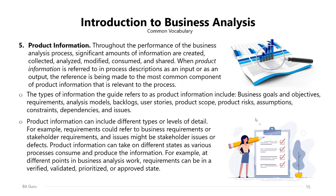Product information can include different types or levels of detail. For example, requirements could refer to business requirements or stakeholder requirements, and issues might be stakeholder issues or defects. Product information can also take on different states as various processes consume and produce the information. For example, at different points in business analysis work, requirements can be in a verified, validated, prioritized, or approved state.